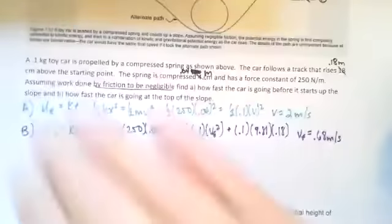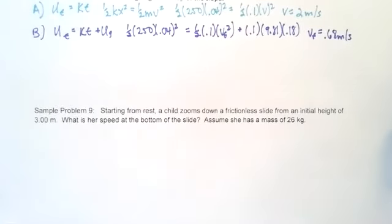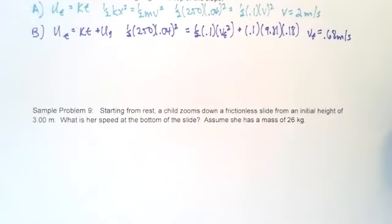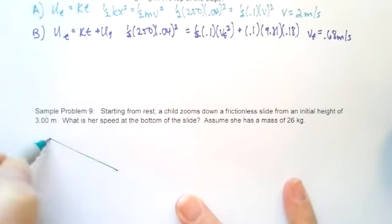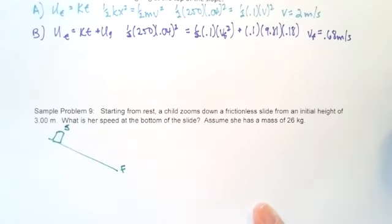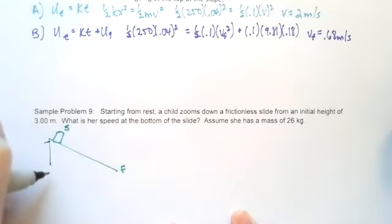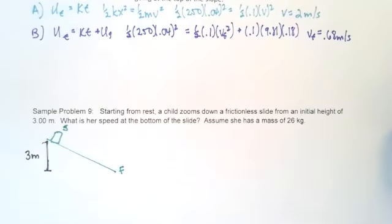So we have starting from rest, a child zooms down a frictionless slide from an initial height of three meters. What is her speed at the bottom of the slide? Assume she has a mass of 26 kilograms. Diagrams are good. It's always good to do a diagram. So we have slide and we've got the child and she's starting at the top. And this is going to be her final. Usually put my start in my final. And we know that the height of the slide is three meters.